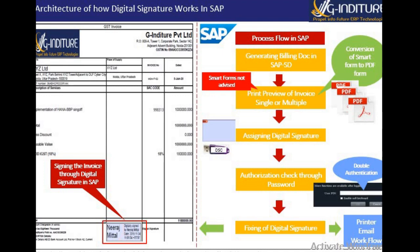You can view one invoice or multiple invoices at once. Once you have reviewed the invoice, you proceed to assign the digital signature using the blue box button. When you click on this blue box, the system connects to the DSC token via an interface, activates it, and asks for the password of your DSC token. On entering the password, the digital signature is assigned, and you can see it in the invoice. The invoice can then be sent to a printer, email, or workflow.